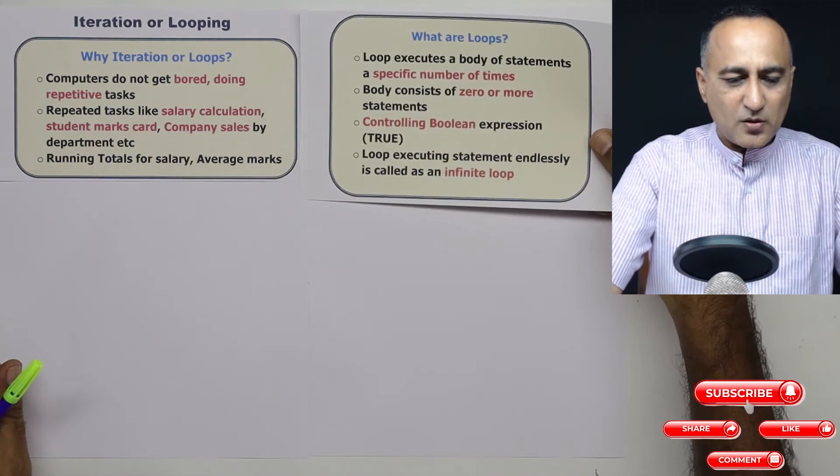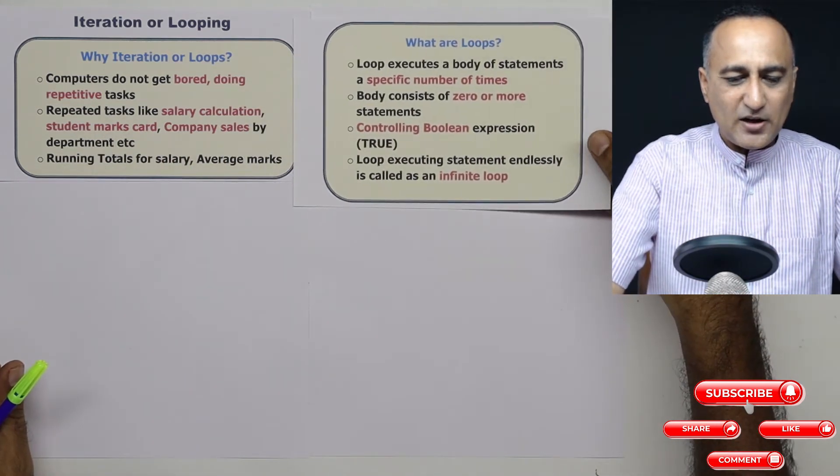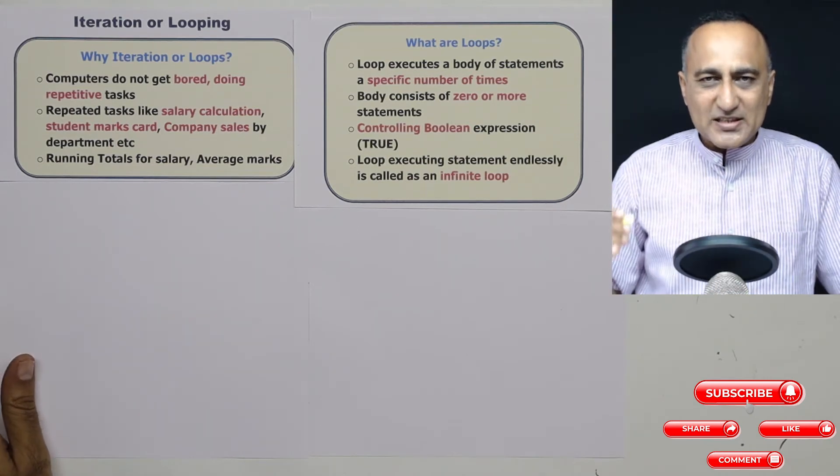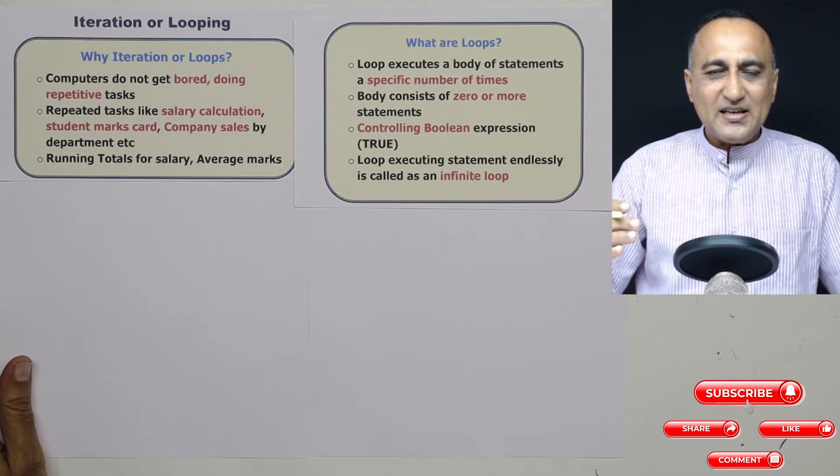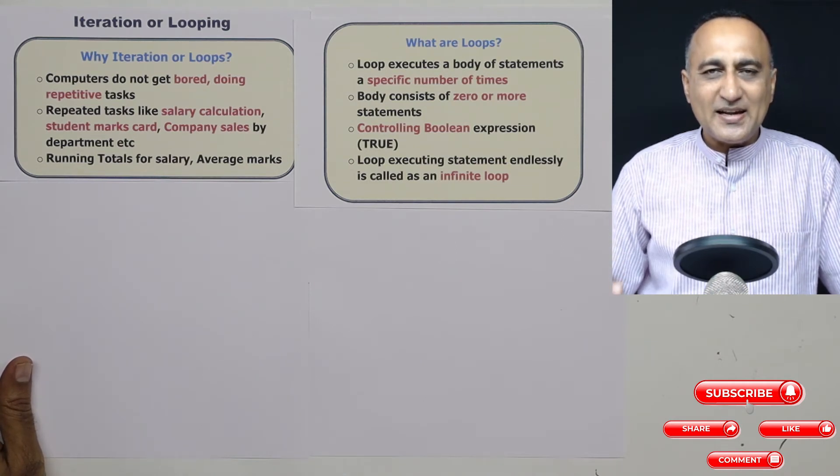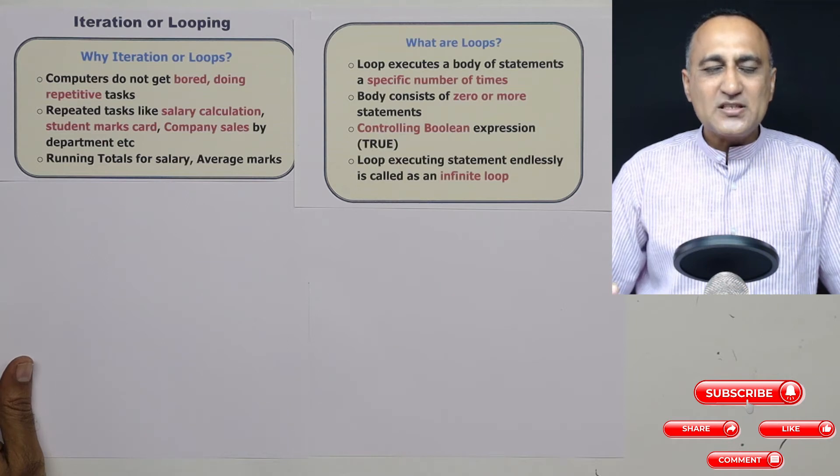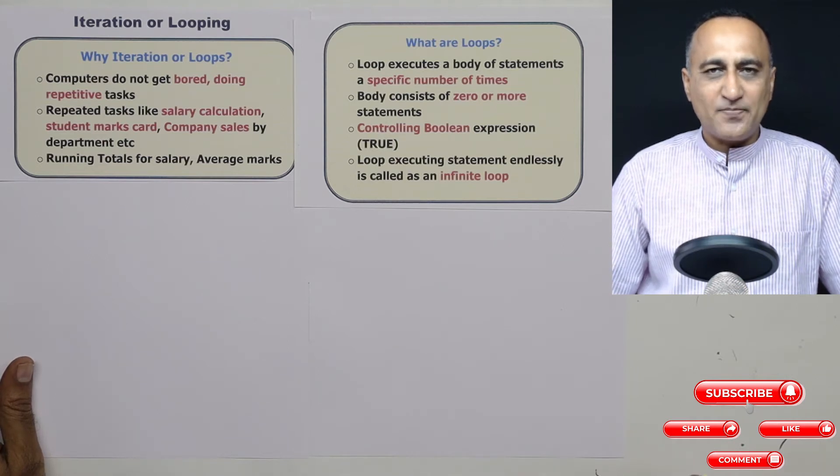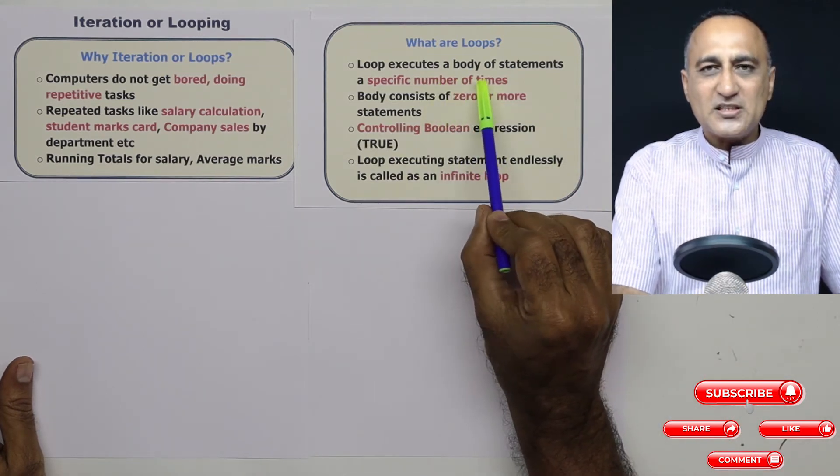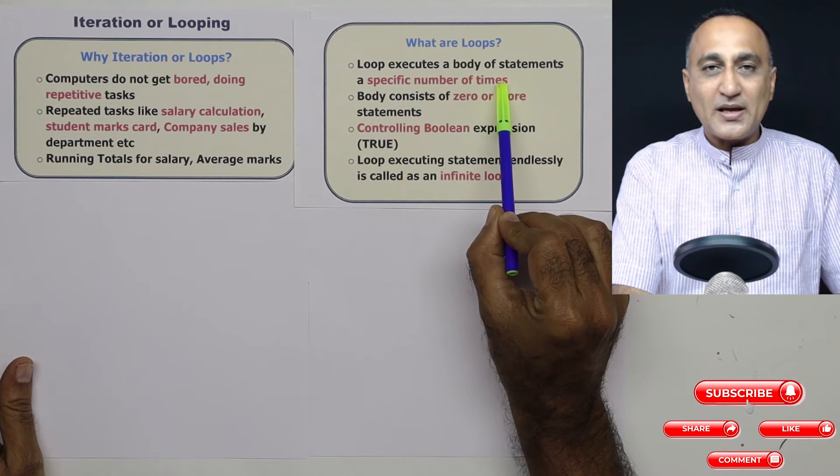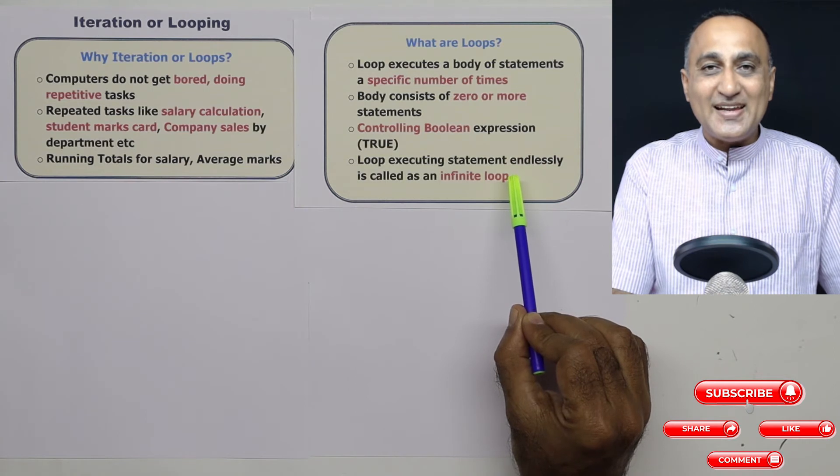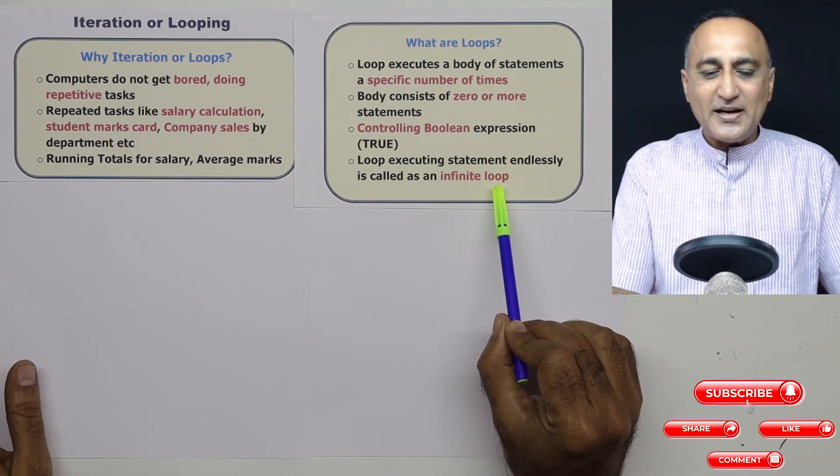Let's try to answer the question: what exactly are loops? Loops are a body of statements, zero or more instructions which are executed repeatedly again and again, based on some Boolean expression or condition. In some cases, as long as the condition is true, I may execute the statements a specific number of times. Sometimes I may have a loop which never terminates, it may keep executing endlessly. This is called an infinite loop.